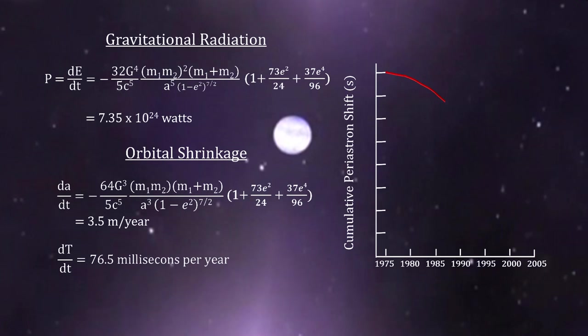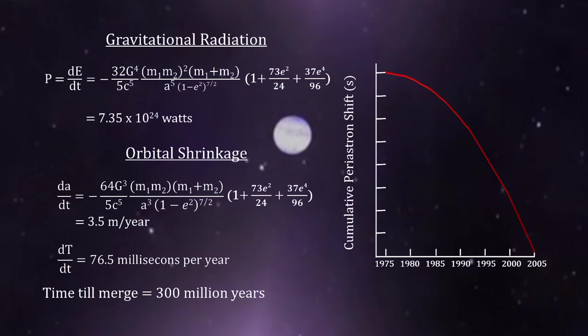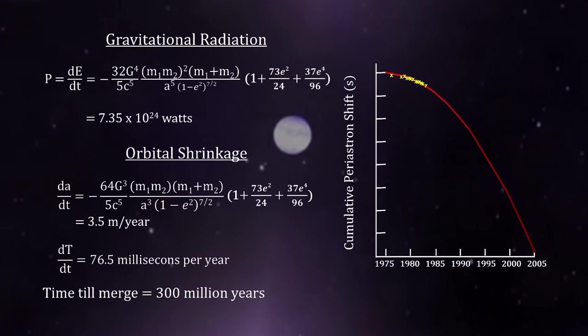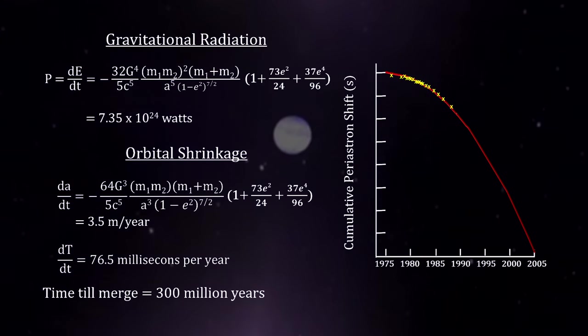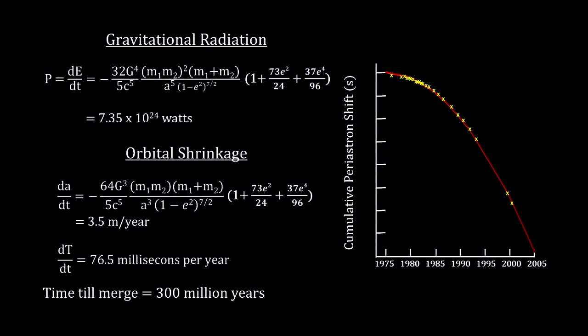This graph maps the accumulated reduction in orbital periods against time assuming that Einstein's equations are correct. Hulse, Taylor and others have studied this binary system for 40 years now. This graph records their measurements. We see that the measurements fit the theory perfectly. This gave scientists confidence that Einstein's gravitational waves do indeed exist.